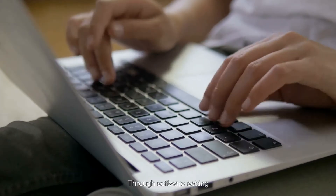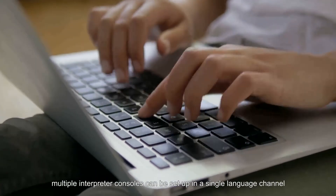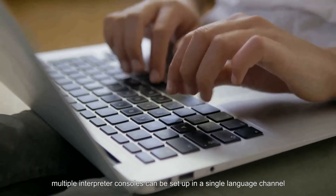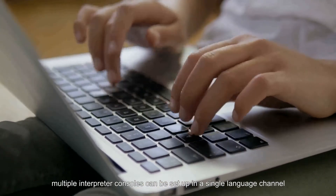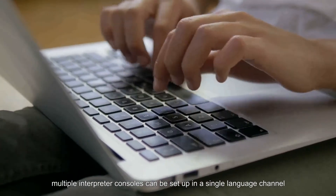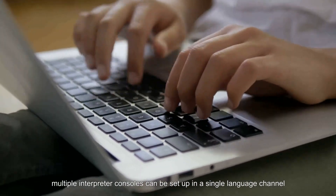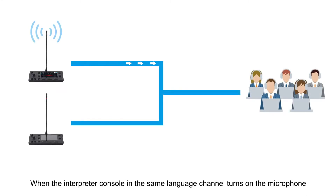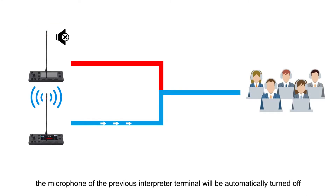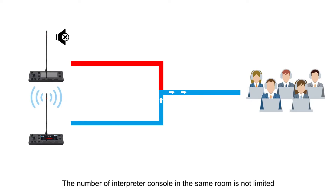Through software setting, multiple interpreter consoles can be set up in a single language channel. When the interpreter console in the same language channel turns on the microphone, the microphone of the previous interpreter terminal will be automatically turned off. The number of interpreter consoles in the same room is not limited.